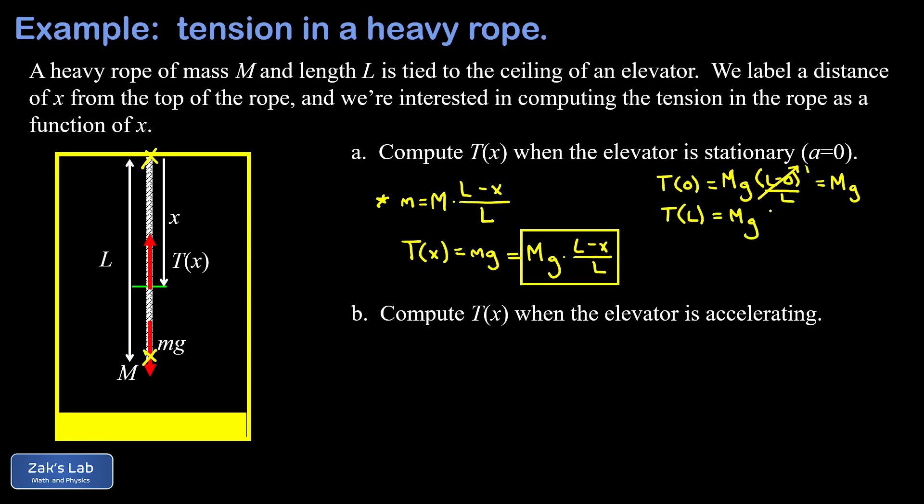So we plug in x equals l and make sure it works. We have a tension of big mg times l minus x, which is going to be l minus l here, divided by l. And l minus l is zero. So the tension is zero at the end of the rope. So that's working like it's supposed to. So our solution is looking pretty good.